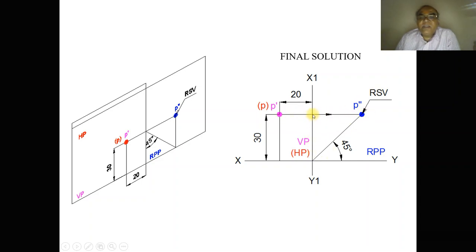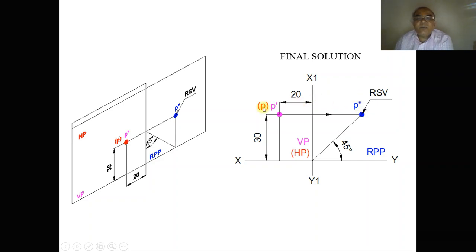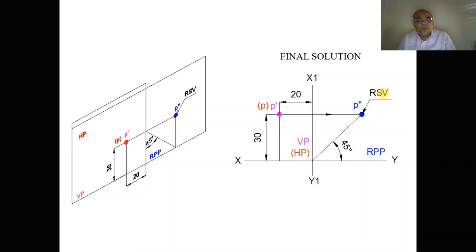Behind VP — 30 mm in the vertical — becomes horizontal. Draw a horizontal projector from p-dash. Both p-dash and the top view will be on this line, and p-double-dash and p will be on the same line. The distance above HP is 30 mm with respect to XY, and behind VP is also 30 mm. The point you get is p-double-dash, which is the right side view.